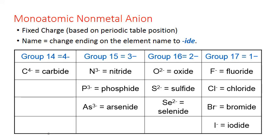The monatomic or representative nonmetal anions come from columns 14, 15, 16, and 17 of the periodic table. The charge on the ion can be predicted from the column number or the position of the element on the table. The name of these ions is simply the same as the element name, but we change the ending to -ide. So carbon becomes carbide when it's in its ionic form, nitrogen becomes nitride, oxygen becomes oxide, and so forth.